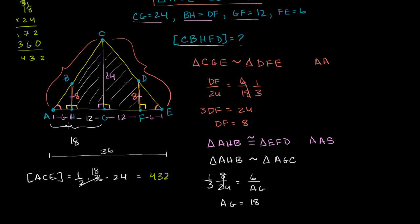The area we care about is the entire triangle minus the two small wedge triangles at the ends. Each wedge has area one-half times 8 times 6, which is 24. So the final area equals 432 minus 24 minus 24, or minus 48, which equals 384 square units.